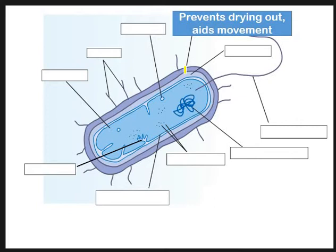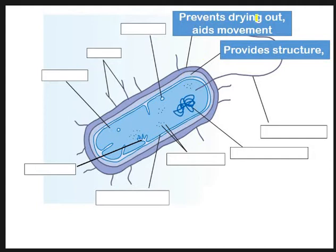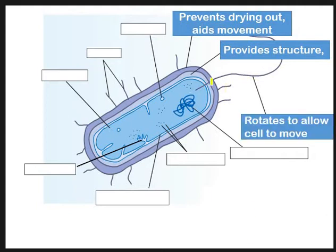Looking at the functions: our outer capsule, the slime layer, prevents the bacteria from drying out. The next layer in is the cell wall, which provides structural support. Then there's the flagellum - it's the flagellum that rotates to allow the cell to move, a bit like a sperm. Sperm has a flagellum for the same thing, to allow movement.